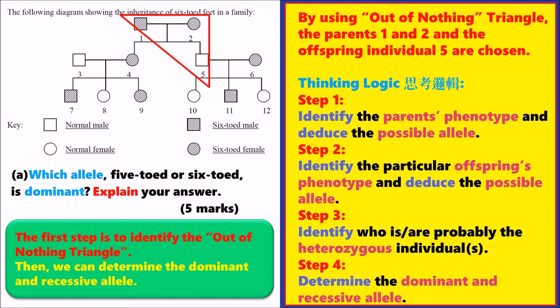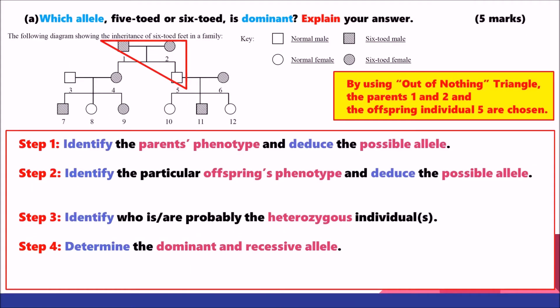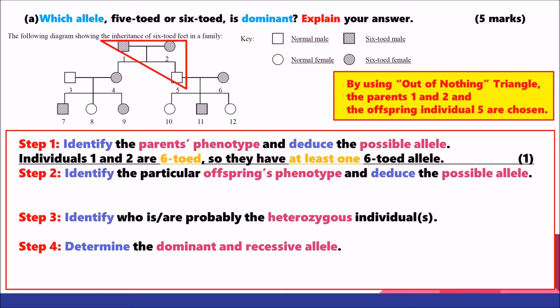The whole thinking logic is deduction. You may have some assumption that the 5-toed allele or the 6-toed allele is the dominant allele, but you still need to pretend that you don't know. Analyze the out of nothing triangle step by step. Firstly, we talk about the parents — individuals 1 and 2 are 6-toed, so they have at least one 6-toed allele. Since we do not know whether the 6-toed allele is dominant yet, we can only confirm there must be at least one 6-toed allele in individuals 1 and 2.